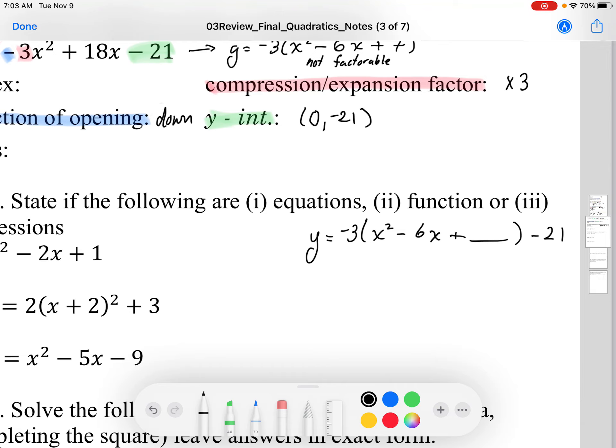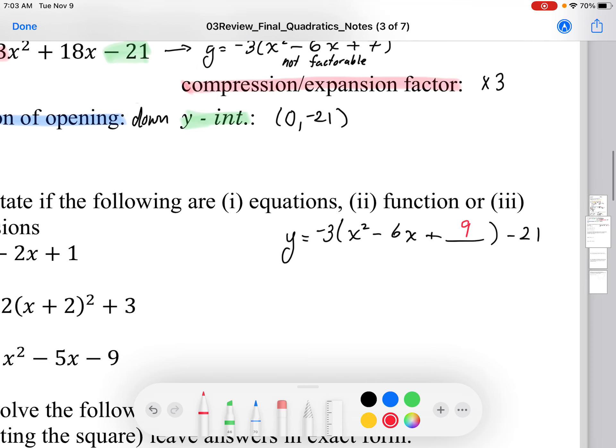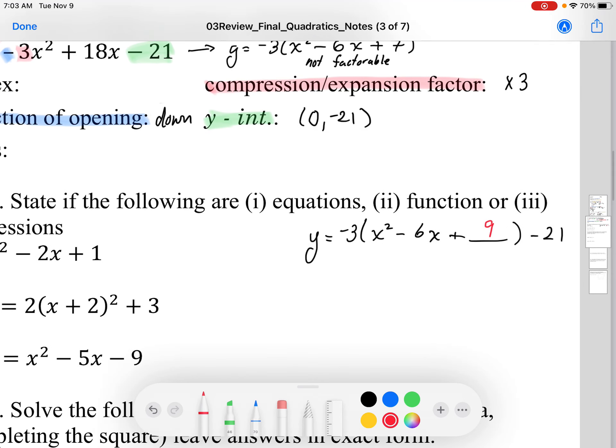So we're going to take half the middle, square it to get the 9. And then to balance this off, we've added 3 times 9, -3 groups of 9, which is -27. So we're going to have to add 27 to balance this off.